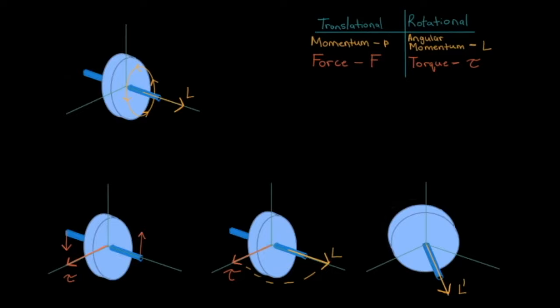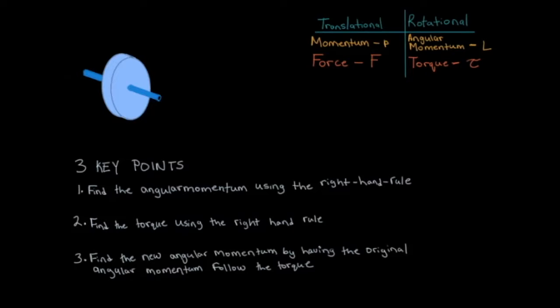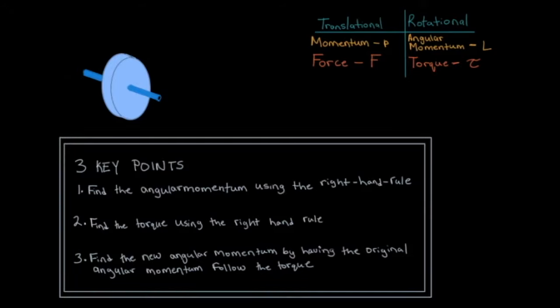And that's exactly what's happening in this video right here. To summarize: we predicted which way a spinning wheel would tilt or precess by doing three things. First, we found the angular momentum using the right hand rule. Second, we found the torque, also using the right hand rule. And finally, we found the new angular momentum by having the original angular momentum follow the torque.